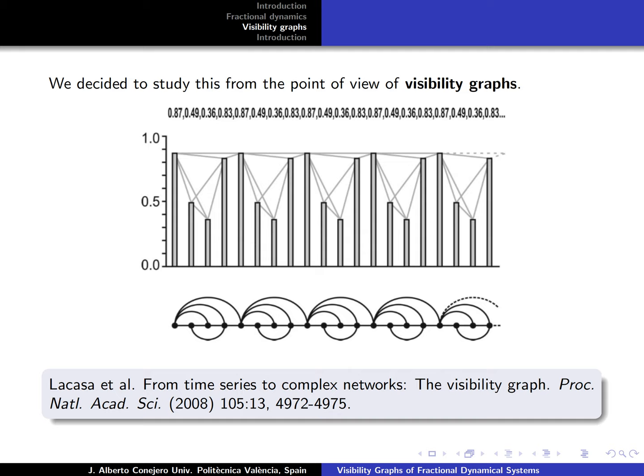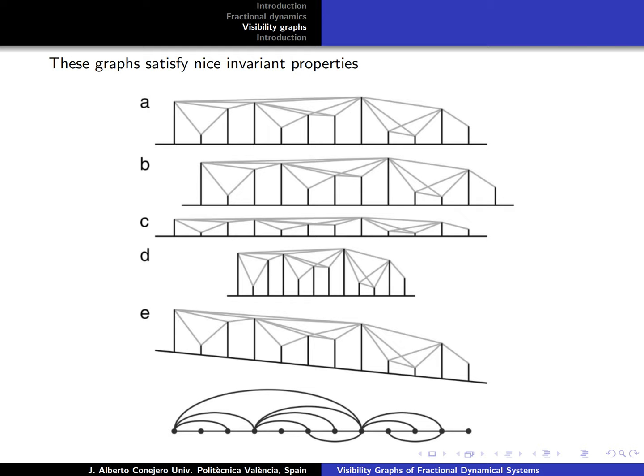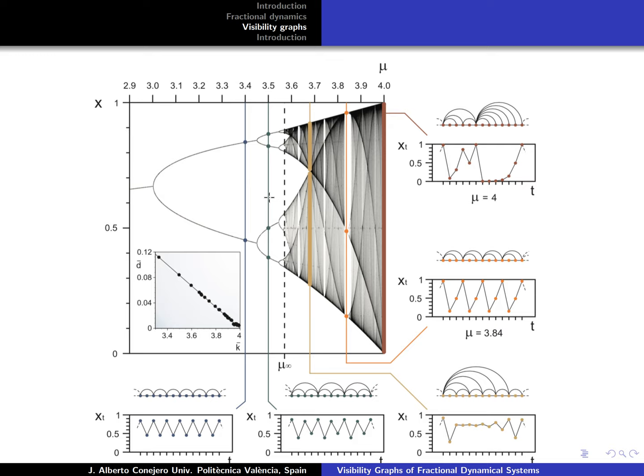These graphs represent nice properties which are visually represented here: they are invariant by translation, scaling, and also if we have linear transformations. In all cases, the degrees of the number of connections of each node, and the nodes with which they are connected, remain as they were. In fact, this comes from a work of Lacasa working with what they call Feigenbaum graphs.